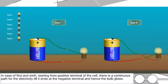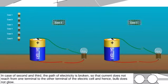In case of second and third, the path of electricity is broken so that current does not reach from one terminal to the other terminal of the electric cell, and hence bulb does not glow.